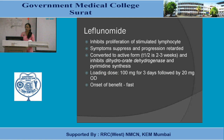Leflunomide inhibits proliferation of stimulated lymphocytes, suppressing symptoms and retarding disease progression. It is converted to an active form with a very long half-life of 2-3 weeks. It inhibits the enzyme dihydroorotate dehydrogenase, leading to inhibition of pyrimidine synthesis. It is given as a loading dose of 100 mg for 3 days, followed by 20 mg daily.